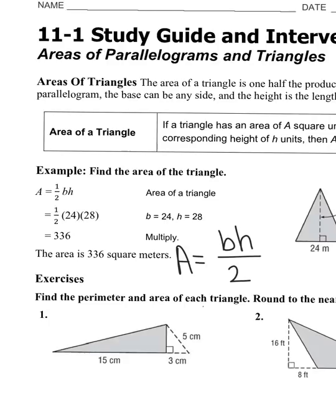This section also covers perimeter and area. For the perimeter of a triangle, you just need all three sides and add them together — there's no special formula, just add them all.